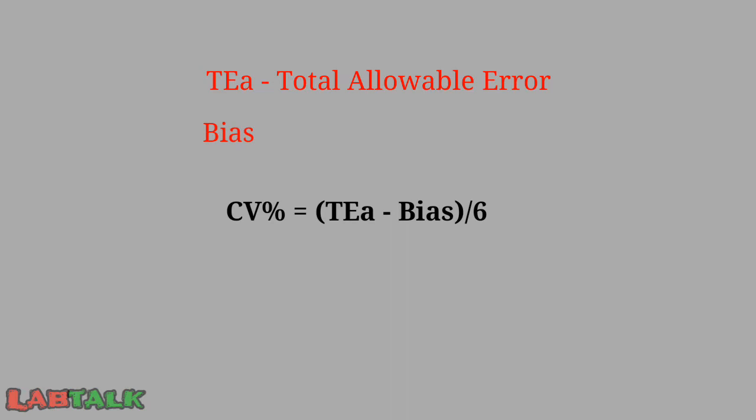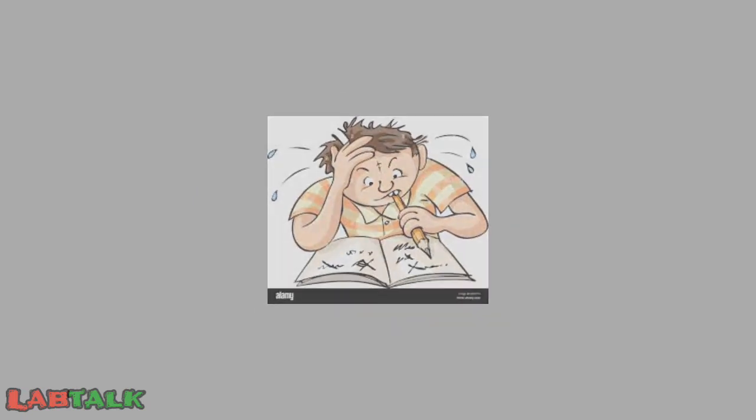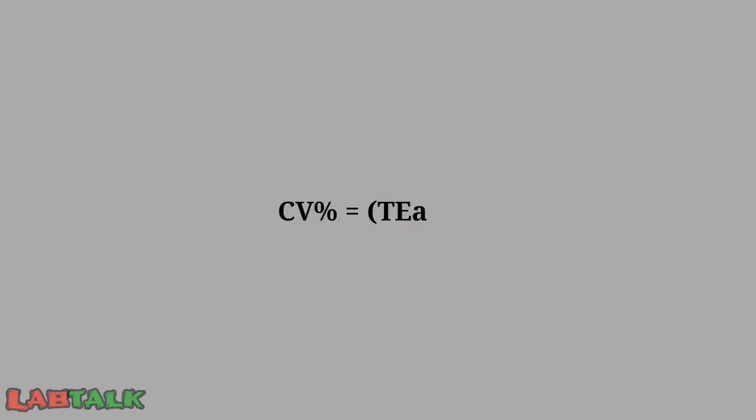The target performance for each laboratory should ideally be world class performance — that is 6 sigma. So CV% = (Total Allowable Error − Bias) / 6 gives the CV percentage needed for 6 sigma. However, achieving 6 sigma in a clinical laboratory is very difficult. The industry standard suggests that 4.5 sigma is sufficient to maintain quality and is more realistic and practically achievable. Replacing 6 with 4.5 gives the target CV% for industry standard performance.